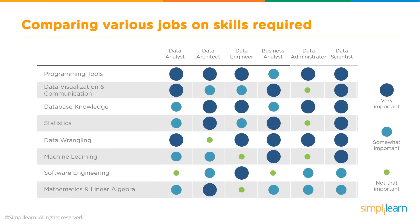A data scientist needs to be good at programming tools, data visualization, database knowledge, statistics, data wrangling, and machine learning. They also need a good amount of knowledge in software engineering, mathematics, and linear algebra — which means you basically need to know everything about the data. This goes to show that being a data scientist isn't easy, but it also cements why it is one of the most lucrative jobs in data science.